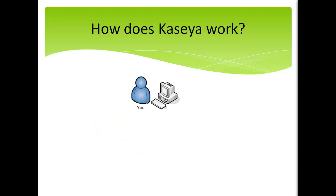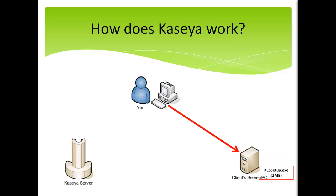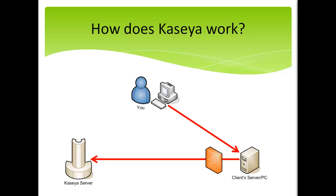Before we jump into the live demo, I just wanted to share with you the very basics of how Kaseya works. To start with, there are three pieces of the puzzle: you, your client's machine, and the Kaseya server. You will need to install a very small 2MB agent on your client's server, desktop, laptop, Mac, or Linux box. We'll talk about different ways to get that installed when we do the live demo portion. Once installed, the client's system will securely phone home to the Kaseya server. And because the client initiated the contact, in most cases it goes right through the client's firewall.